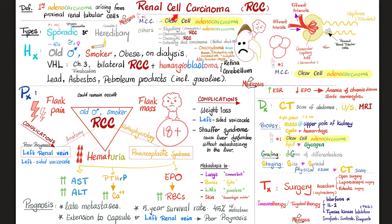On physical exam and history, renal cell carcinoma has a classic triad: flank pain with costovertebral angle pain and tenderness, a palpable flank mass, and hematuria. However, not every case has all three. Many remain occult — no symptoms whatsoever — discovered incidentally on imaging.